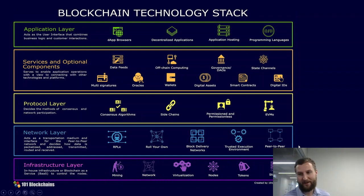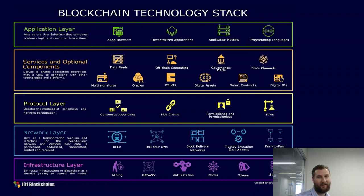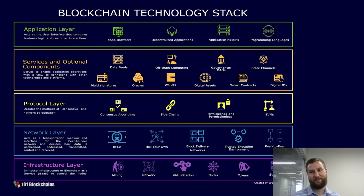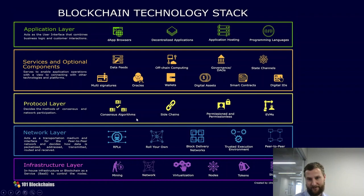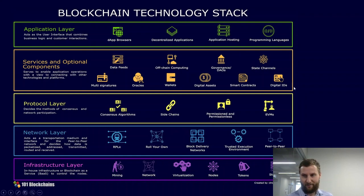Moving up, we need a network layer to communicate with peers — peer-to-peer is the most obvious here, different from a client-server model where you have a centralized hub with spokes communicating to clients. Then in the middle we put a protocol layer, because we have to decide what to do with all this communication. Consensus algorithms are a big topic in blockchains, as are sidechains as a way to improve performance.